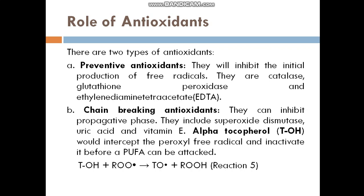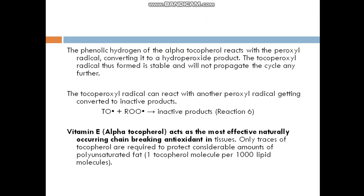Alpha-tocopherol would intercept the peroxidation and inactivate it before a PUFA can be attacked. The phenolic hydrogen of alpha-tocopherol reacts with the peroxidation radical, converting it to a hydroperoxide product. The tocopherol radical thus formed is stable and will not propagate the cycle any further.